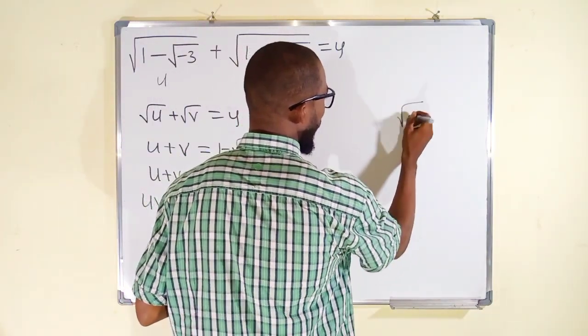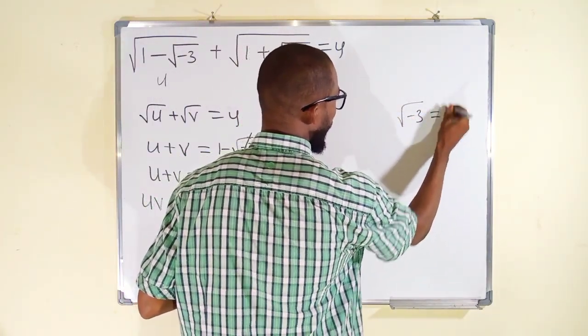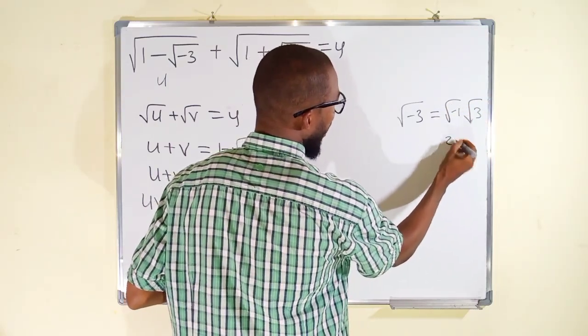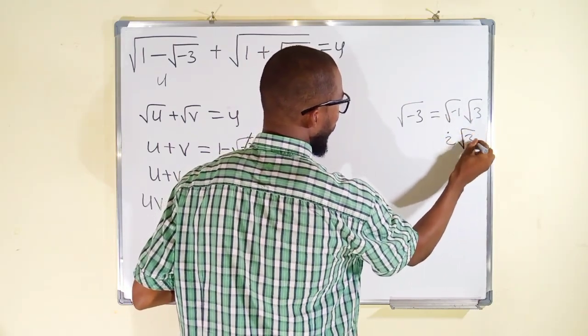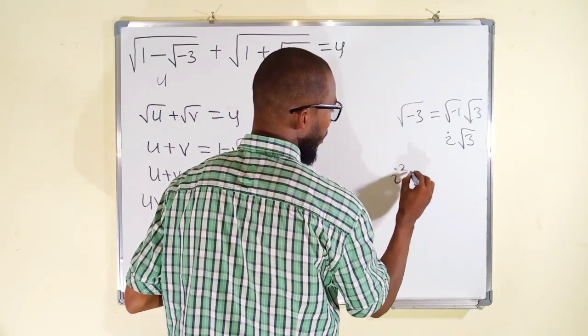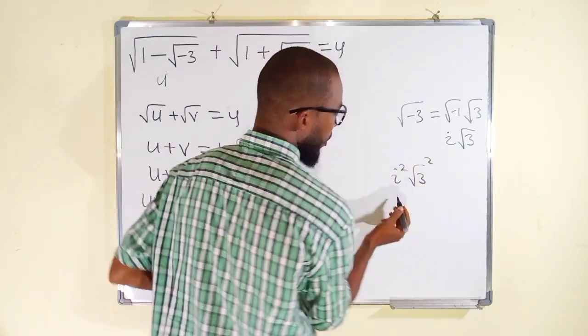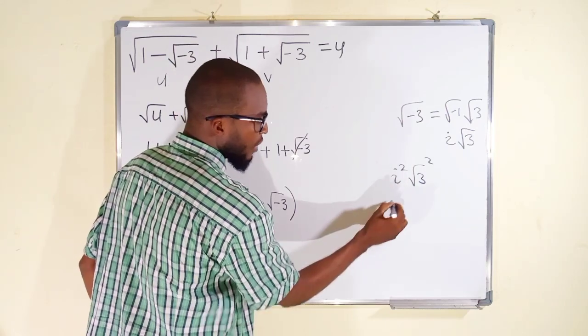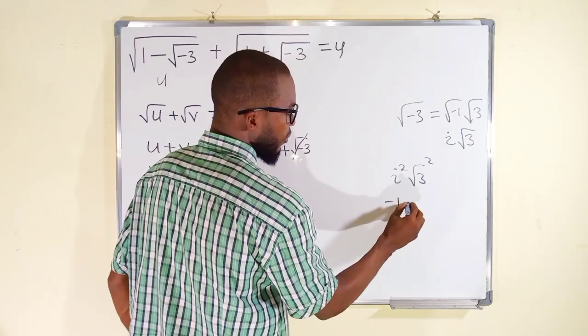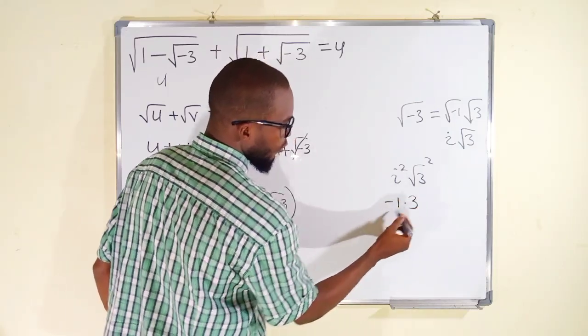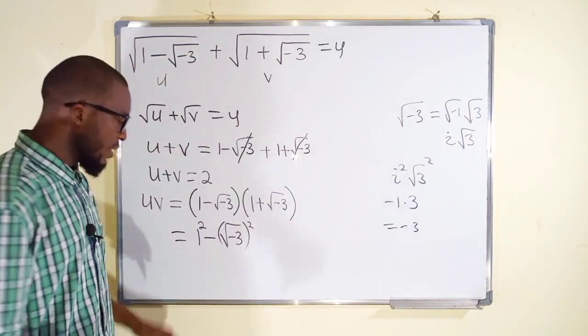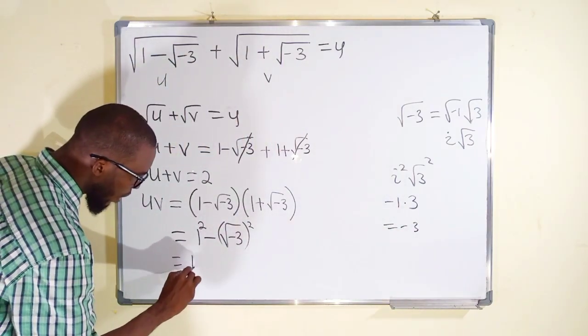If you like, you can simplify it. You know √(-3) is the same thing as √(-1) × √3. √(-1) is i and √3 remains √3. But if you square i and square √3, i² is -1 and (√3)² is 3. So if you multiply them you get -3. So in either way you're going to get -3.